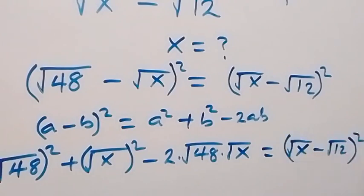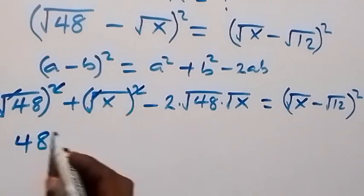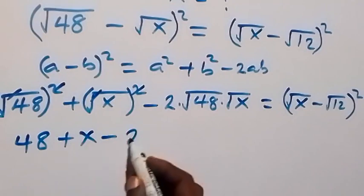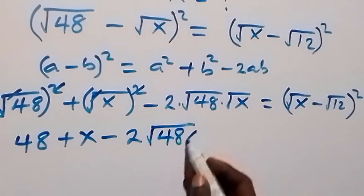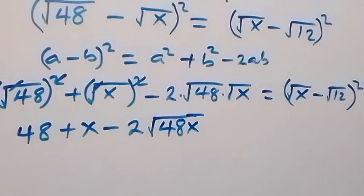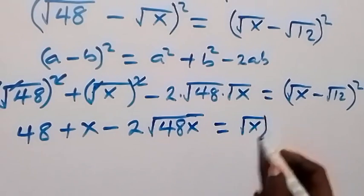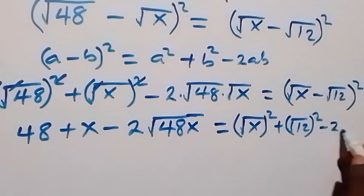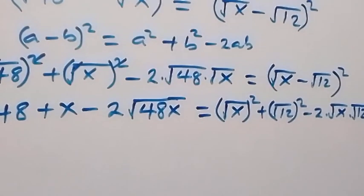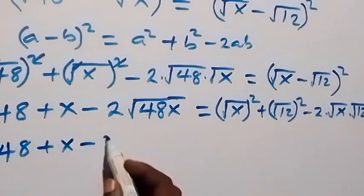Simplifying — squaring cancels the square root — so here we have 48 plus x, then minus 2 times square root of 48x. This equals the expansion on the right side: x plus 12, then minus 2 times root x times root 12.